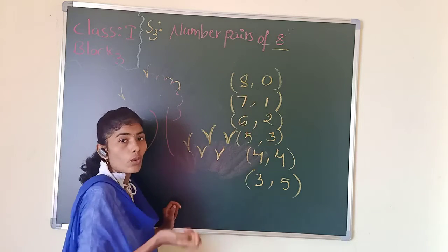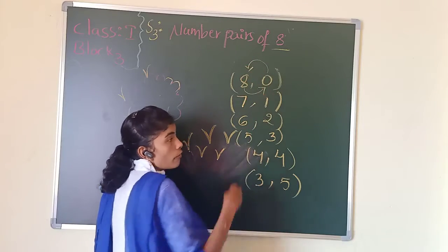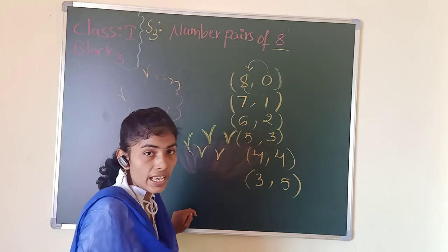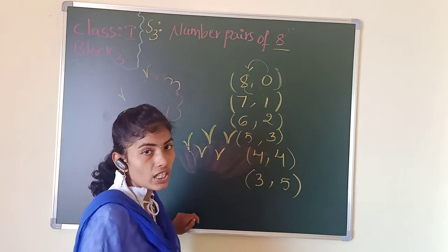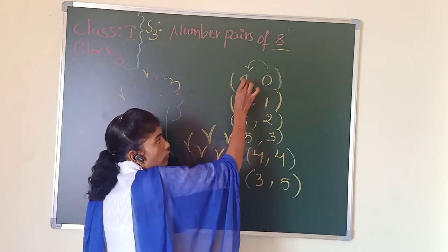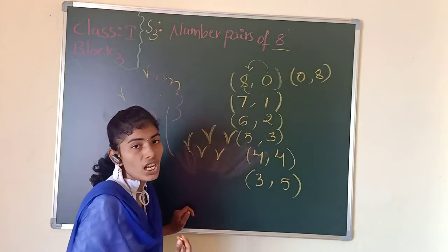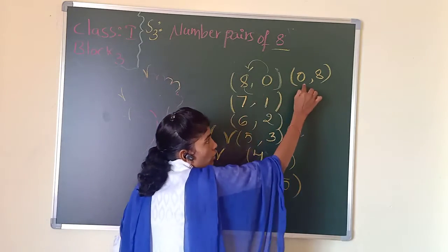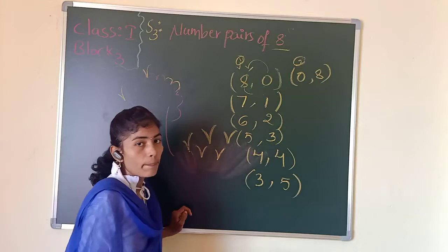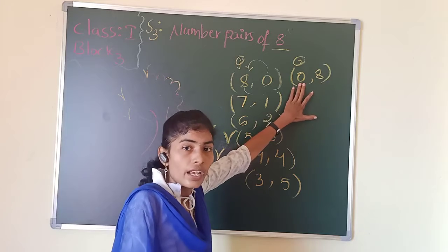We can also flip the numbers. Flip means we write the same numbers in different positions — we are not changing the numbers, only the position. So 8 comma 0 is equal to 0 comma 8. This is one pair and this is another pair. Simply we flip the numbers to represent another number pair for 8.